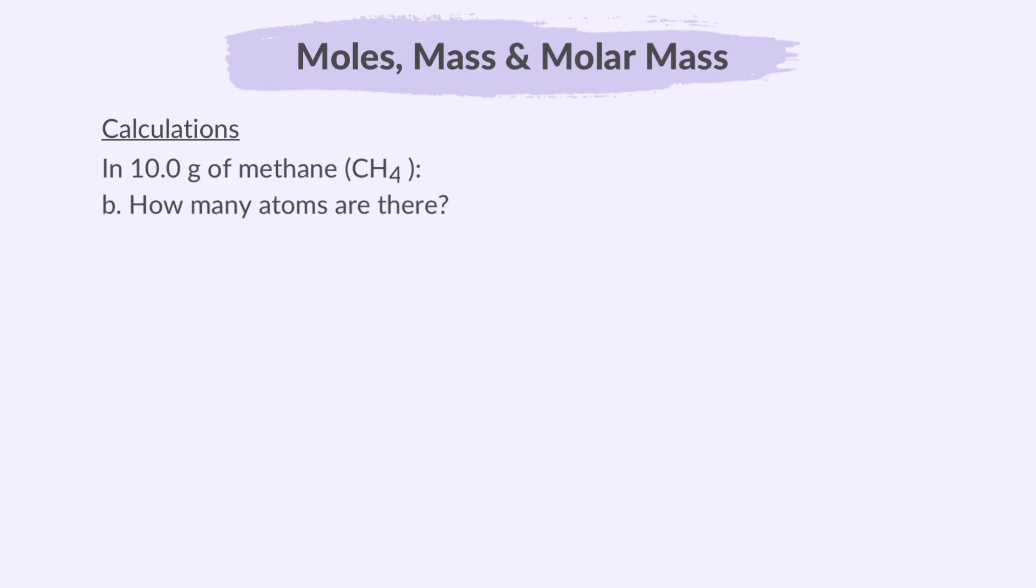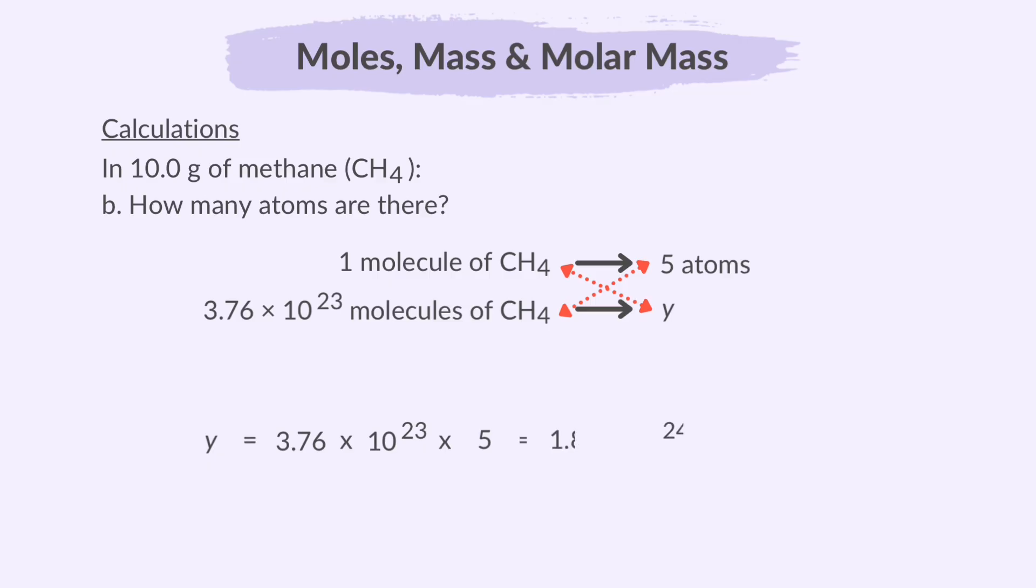Now, how do we find out how many atoms are there in CH4? One molecule of CH4 has 5 atoms because there is 1 carbon atom and 4 hydrogen atoms. We just found that there are 3.76 times 10 to the power 23 molecules of CH4. How many atoms does this translate to? We simply multiply this by 5. That gives us 1.88 times 10 to the power 24 atoms.